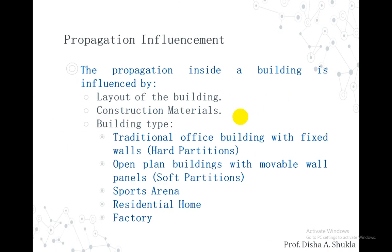Certain propagation influences — that is, the reasons the propagation inside a building is affected — include certain parameters. The first one is the layout of the building: how a particular building has been constructed and laid out. The floor plan of a building is an effective parameter for propagation inside the building.